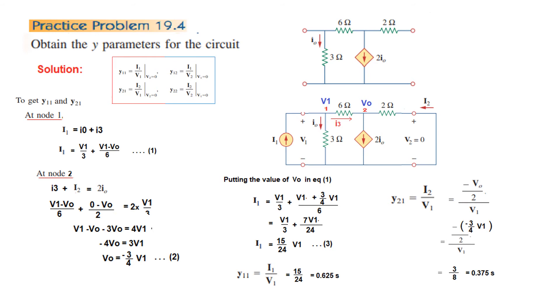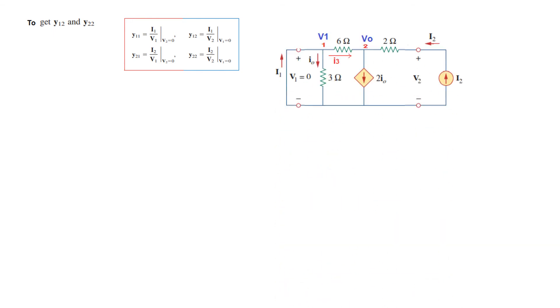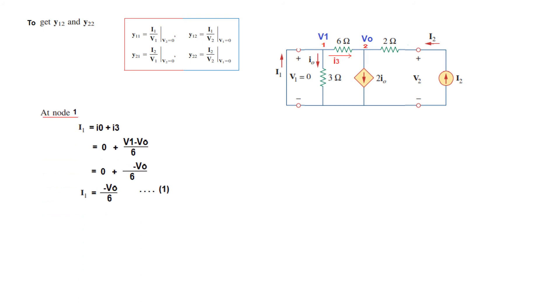For the second pair of parameters, the condition is that V1 = 0, so the voltage on the left hand side of the circuit should be zero. We short-circuit the left side to make V1 = 0 and connect a current source I2 on the right hand side. We will find the nodal currents the same way as in the previous case.